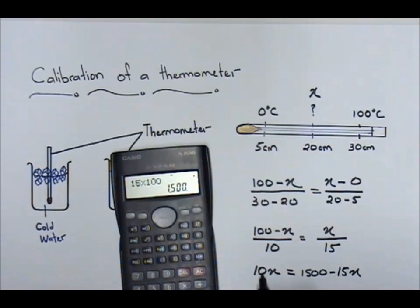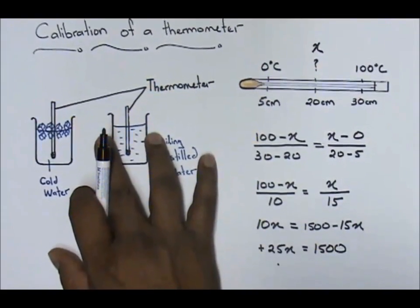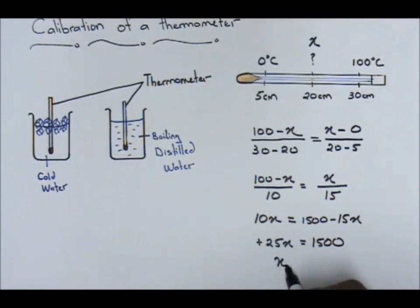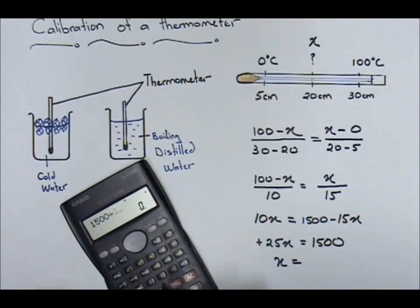So you bring x to the other side. You bring negative 15x to the other side, it will be plus. So here you'll get positive 25x equals to 1500. And the value for x, after you've done this, the value for x equals to 1500 divided by 25. You'll get 60 degree Celsius. As easy as that.